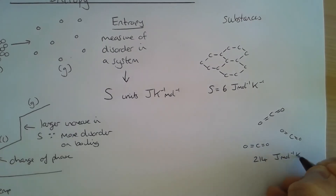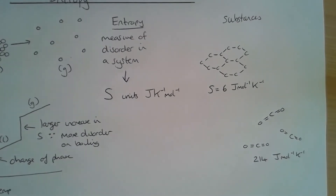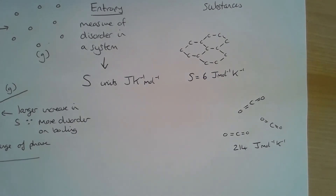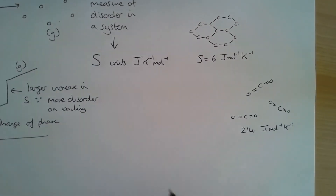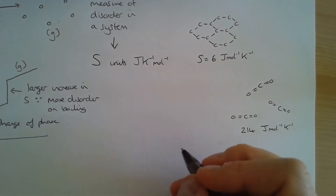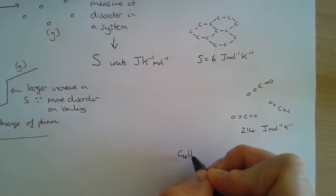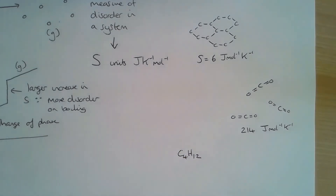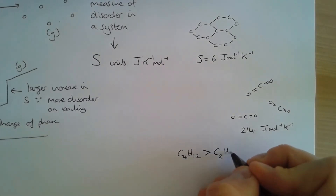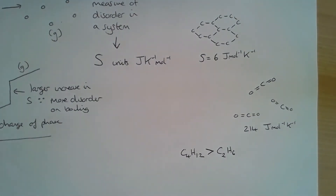As substances at room temperature become gases, they're more likely to be disordered. We can also say that the larger the molecular mass, the larger the entropy. Looking at some organic compounds, the entropy for butane will be larger than the entropy for ethane, because the molecular mass has increased and there are more bonds and more ways of rearranging.